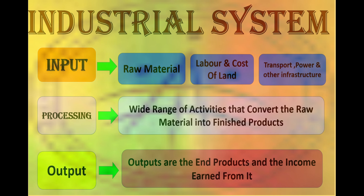Basically the whole industry works on an industrial system which includes input, processing, and output. Input includes raw material, labor, capital, transport, power, and other infrastructure. These are the inputs which are needed for any industry to work. Then second is the processing, which involves a wide range of activities that converts raw material into finished product. And lastly is the output.